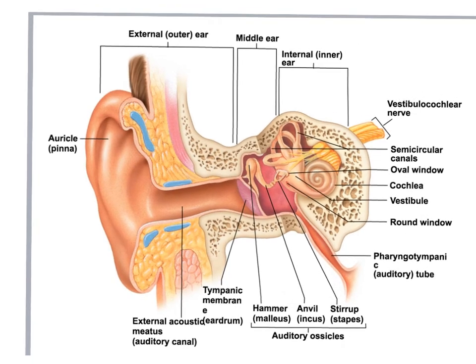There are basically three parts to the ear. We have the external ear, which ends at the tympanic membrane. The external outer ear includes the auricle and the pinna. Then we have the middle ear, which includes the ossicles — the hammer, anvil, and stirrup, or the malleus, incus, and stapes. Then you have the inner ear, which includes the semicircular canals, the cochlea, and the vestibule — important for the senses of hearing and balance.